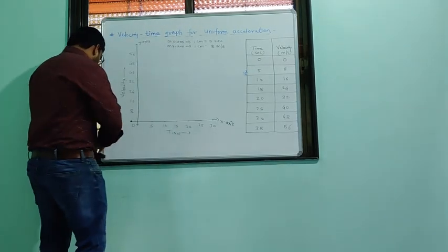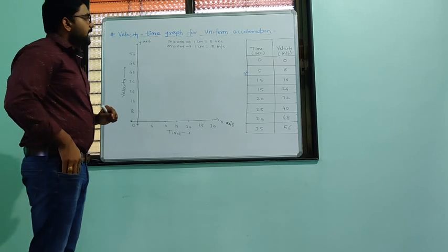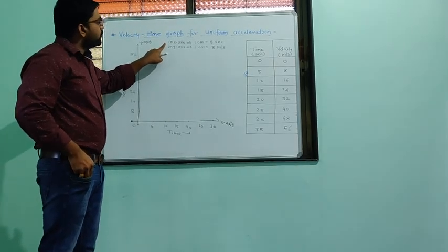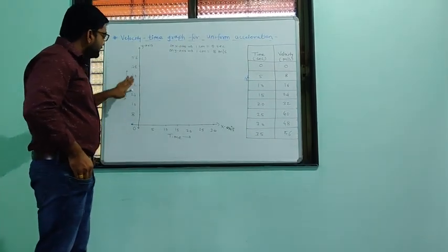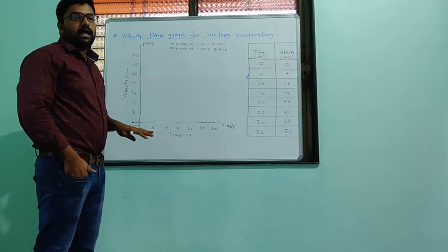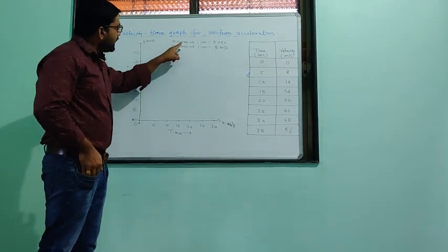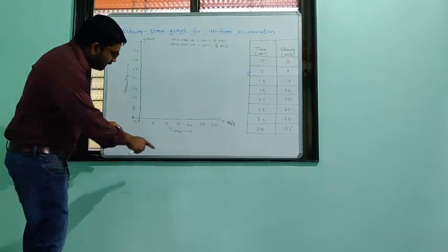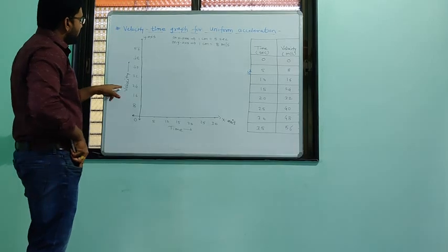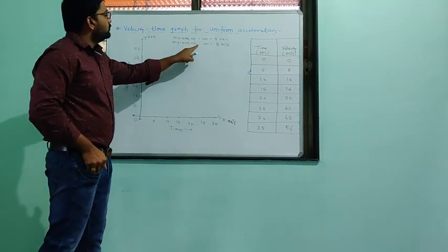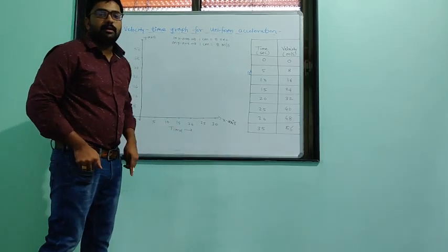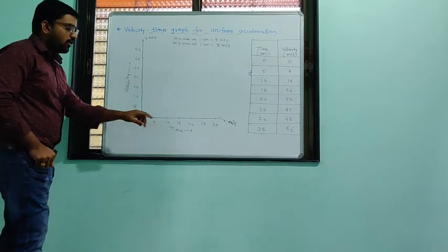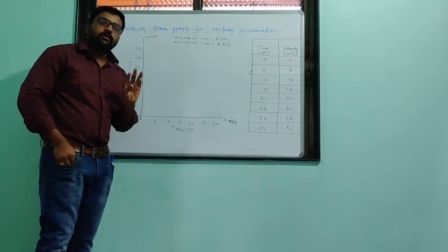When we draw any graph, first we have to write the scales — these are very important parts that tell us the basic information of our graph. On the x-axis we take time: 1 cm = 5 seconds. On the y-axis we take velocity: 1 cm = 8 m/s.